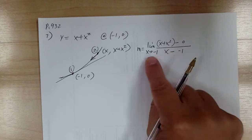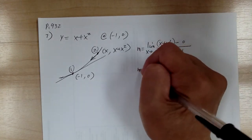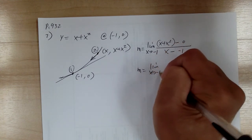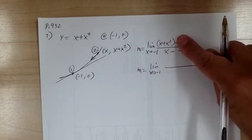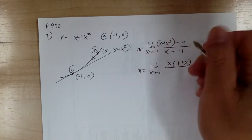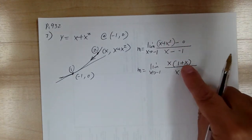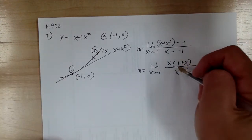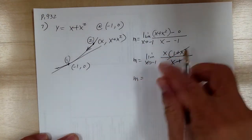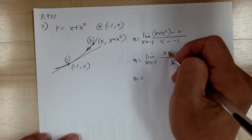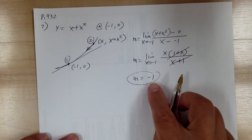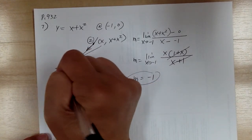As of right now, you cannot substitute negative 1 because you would get 0. This minus 0 simplifies — go ahead and factor the x. Over here you get x plus 1. Notice that 1 plus x and x plus 1 are the same, so you can cancel it out. Once you cancel out, you can substitute. So slope, when you substitute, equals negative 1.